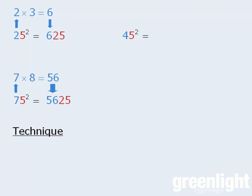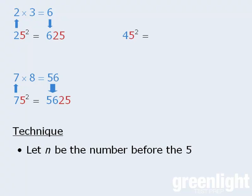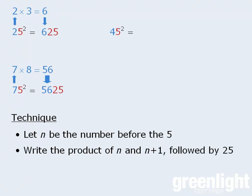So the technique is as follows: Let n be the number before the 5, then write the product of n and n+1, and then add 25 to the end.